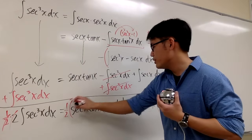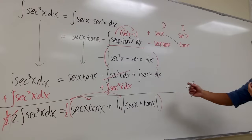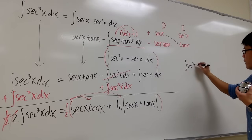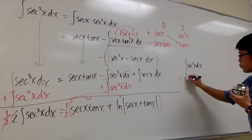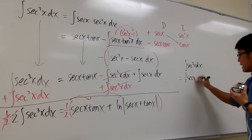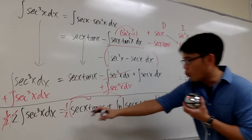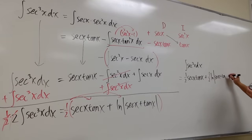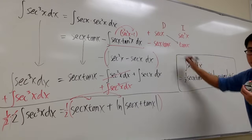Make sure you distribute the one half into the parentheses. So the conclusion is: the integral of secant to the third power x dx equals one half secant x times tangent x, plus one half times ln of the absolute value of secant x plus tangent x, plus C. And this is the final answer.